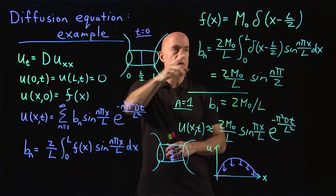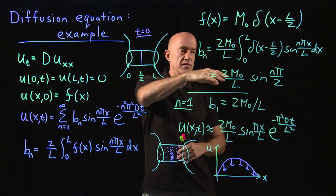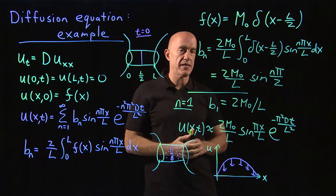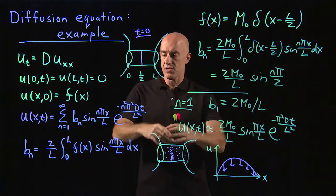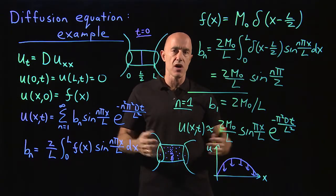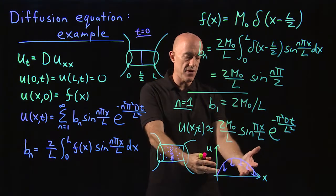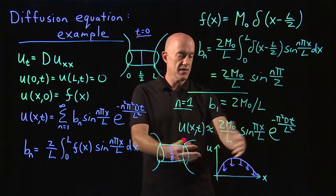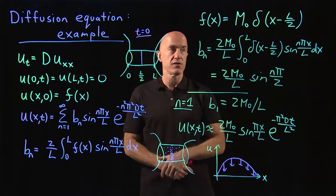We model that very nicely using the Dirac delta function. That allows us to do the integral for BN very quickly. And then the leading order term, which is valid when the time is larger than the diffusion time, gives us that the behavior of the dye looks like a sine function over the domain that's decaying exponentially.